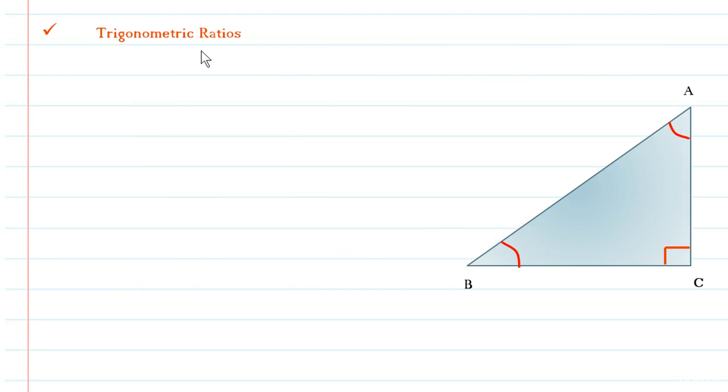For example, triangle ABC which is a right-angled triangle.